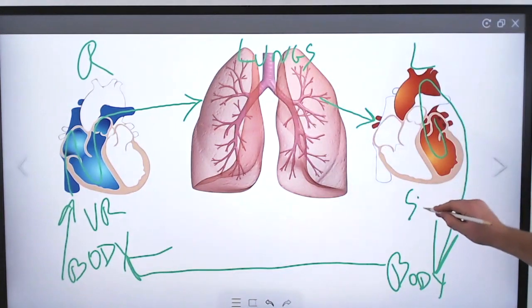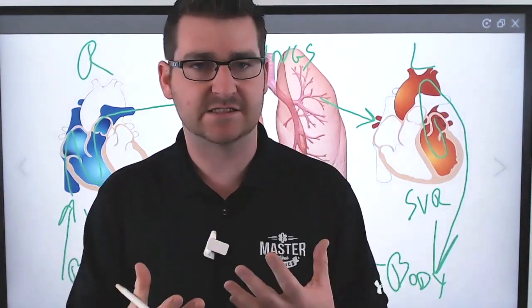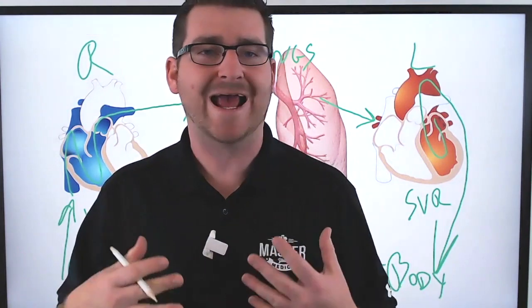This over here, that the left side of the heart has to push against, that resistance left in the system, is called SVR.